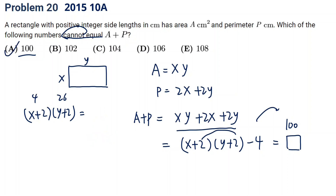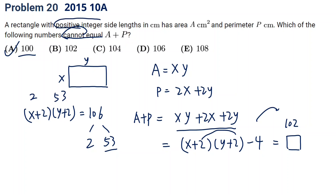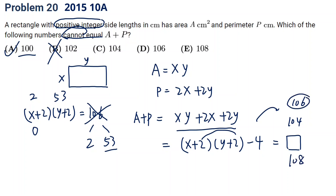Let's try 102. Then (x plus 2)(y plus 2) equals 106. But 106 factors only as 2 times 53 or 1 times 106 — 53 is prime. For 2 times 53, x or y would equal 0, which is not a positive integer. So 102 doesn't work. You can try 104, 106, and 108 — adding 4 gives 108, 110, 112, all of which can be factored with each factor greater than 2. Only 102 doesn't work.